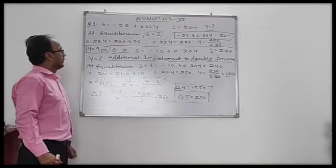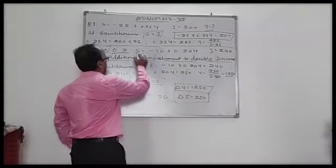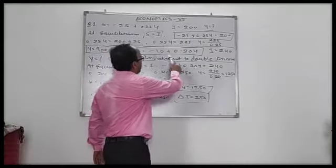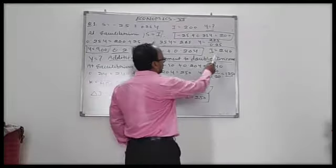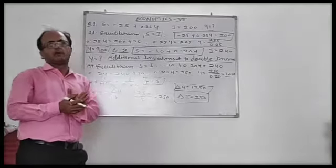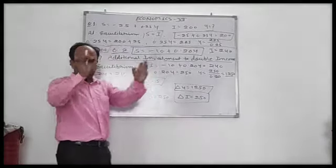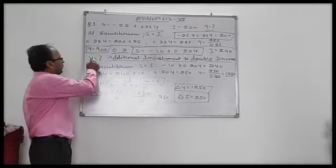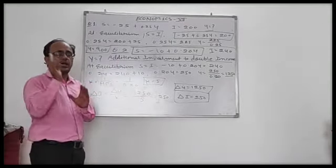We have one more question. In this question the saving function is given as S equals minus 10 plus 0.2Y. The MPS is 0.2, and investment I equals 240 crore. We have to find two things: first, the equilibrium level of income, and second, the change in income.